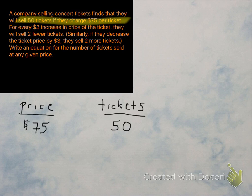The first line there says that they will sell 50 tickets if they charge $75 per ticket. Okay, that's good, but that's not going to be enough to write an equation. We're going to need a little bit more information, like the next line.